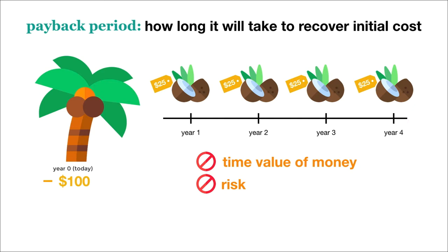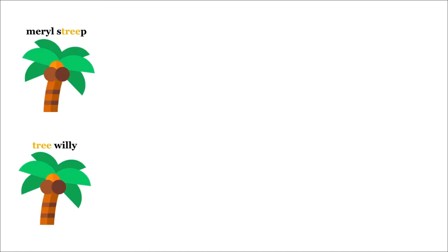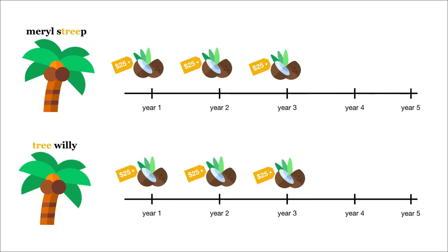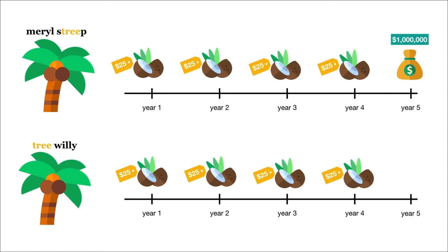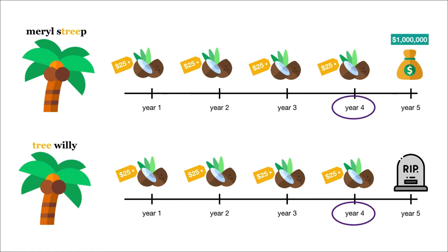Normally, we discount our cash flows using a rate that factors in our return on risk. And third, the payback period ignores what happens after we recover our investment. Suppose we're trying to decide between two coconut trees, Meryl Streep and Tree Willie. Both trees will produce $25 harvests from year one to four. But starting in year five, Meryl Streep will bring in an additional $1 million per year, while Tree Willie will be killed by poachers and produce no more fruit. If we only compare the payback periods, we will be indifferent between these two choices, as both yield a payback period of four years — and yet one is clearly more profitable than the other.